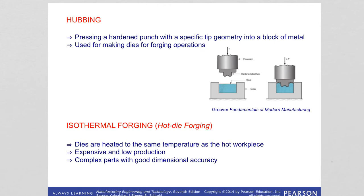Hubbing is a process that consists of pressing a hardened punch with a specific tip geometry into the surface of a block of metal. The cavity produced is then used as a die for forming operations — so hubbing is used to make dies for further forging operations.